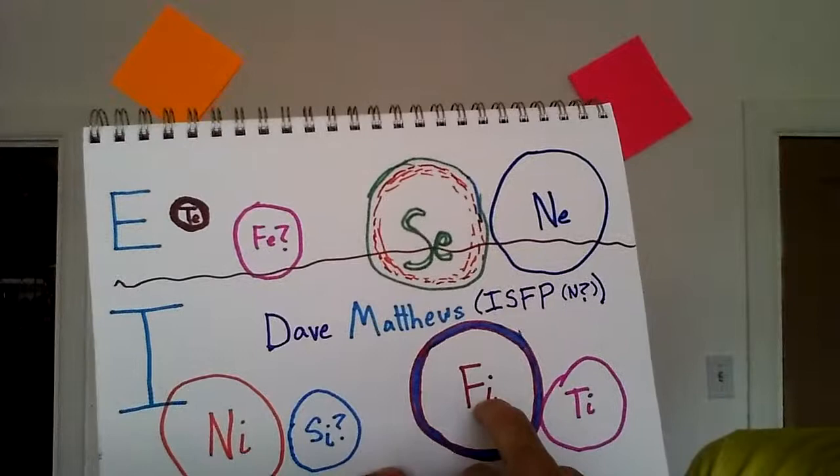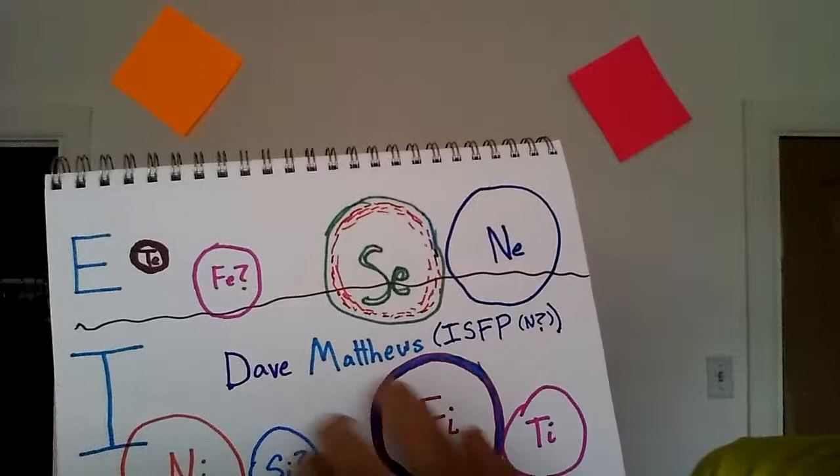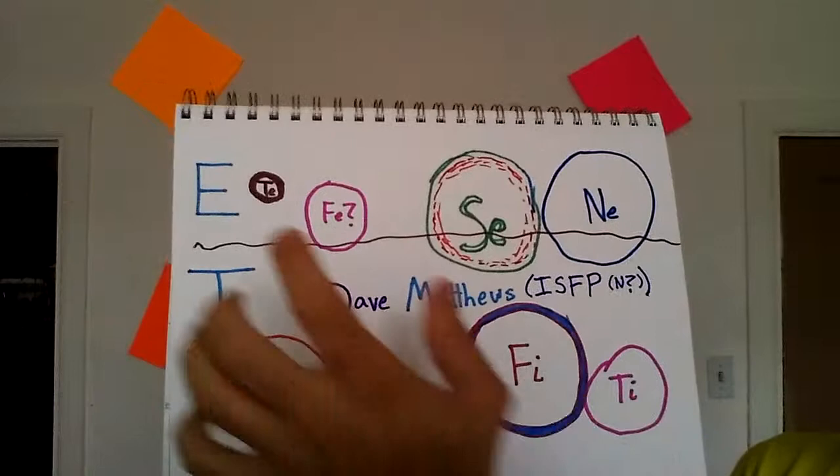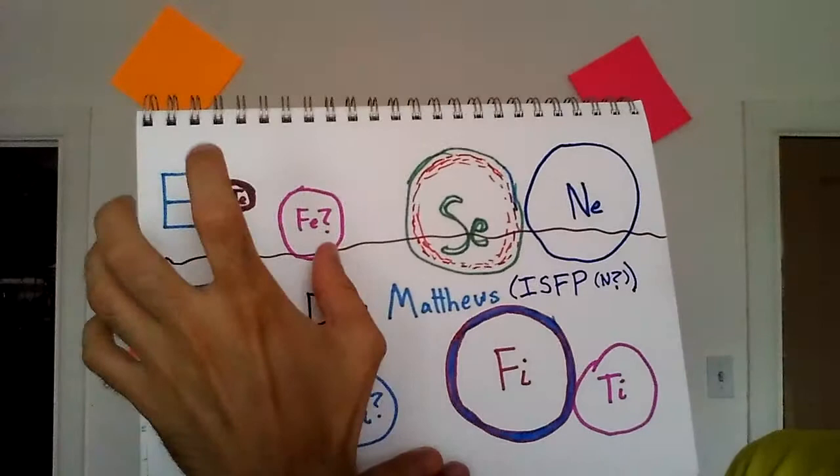But also, you see here, this is the exact opposite. Avril had strong Te and very weak Fi. And now when Dave Matthews gets depressed, he does it in the way the strong Fi, weak Te people do it. Whereas when Avril gets depressed, she gets depressed in the way that strong Te, weak Fi people do it.